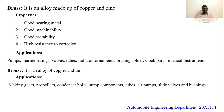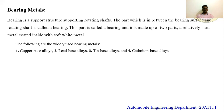Bronze is an alloy made up of copper and tin, mainly used in gears, propeller shafts, condenser bolts, pumps, component tubes, air pumps, slide valves, and bushings. The last material covered is bearing materials. A bearing is a structure supporting a rotating shaft, positioned between the bearing surface and the rotating shaft. Bearings are made up of two parts — hard and soft — and are composed of copper-based alloys, lead-based alloys, tin-based alloys, and cadmium-based alloys.